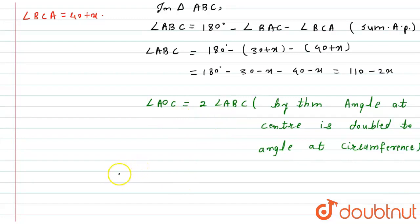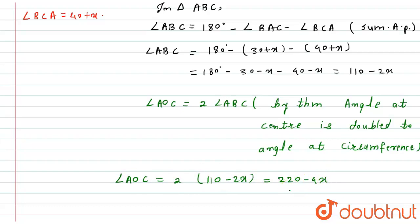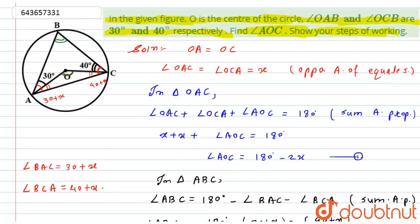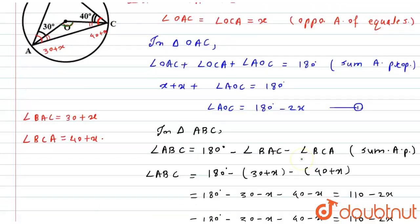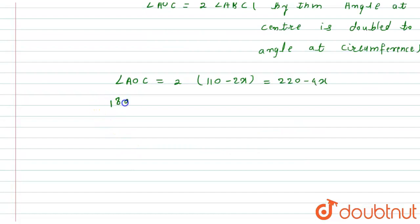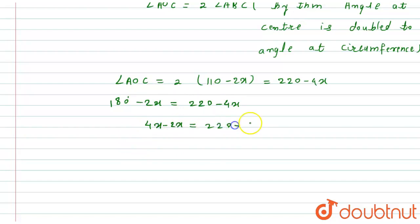Therefore, angle AOC equals 2 times angle ABC, which is 2 times (110 minus 2x) equals 220 minus 4x. From equation one, angle AOC also equals 180 minus 2x. Setting them equal: 180 minus 2x equals 220 minus 4x, so 4x minus 2x equals 220 minus 180, giving 2x equals 40, and therefore x equals 20.